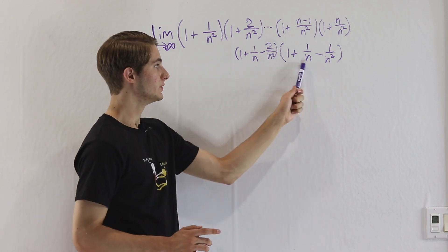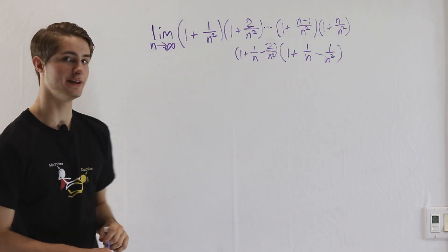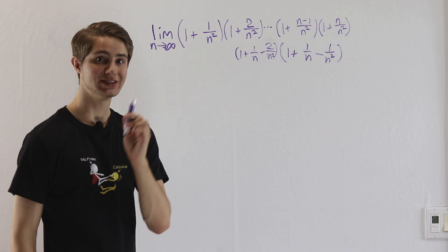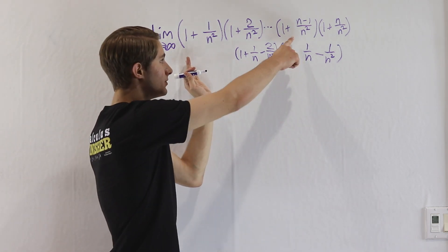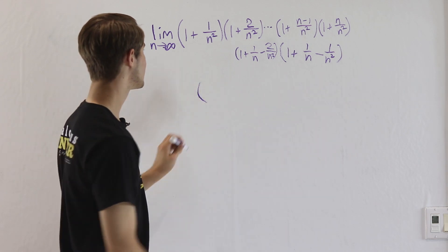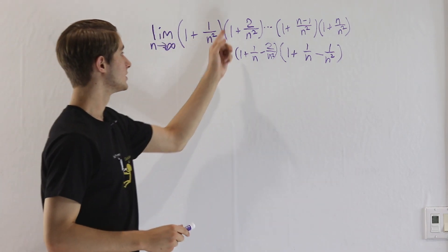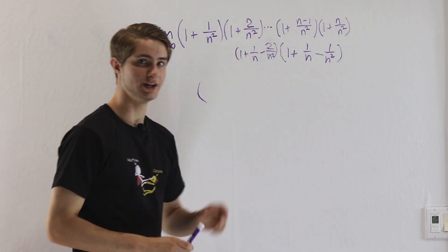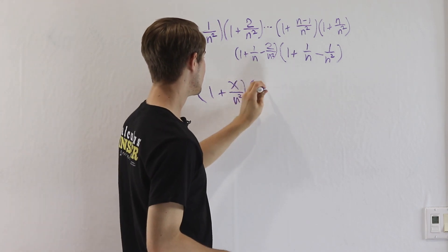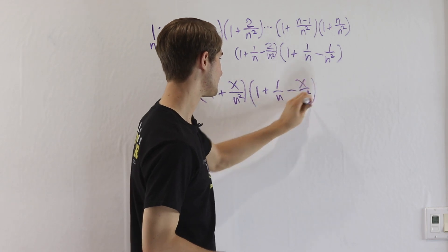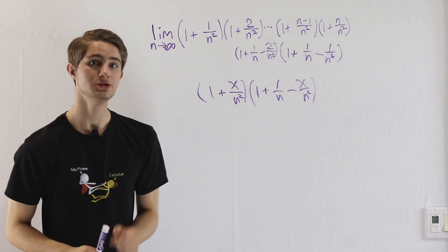The question is: what can we do with this information to make our limit look more like the limit of 1 plus 1 over n to the power of n? Here's the key insight that leads us to solving this problem. What happens if we look at the factors at the beginning along with the factors at the end? We look at 1 plus x over n squared times 1 plus 1 over n minus x over n squared, and ask: what happens when we multiply these two together?